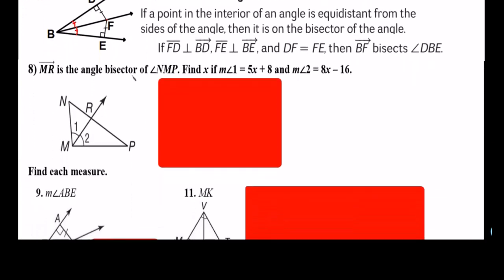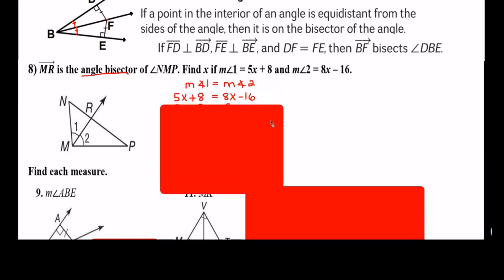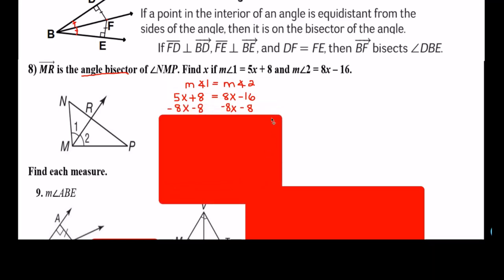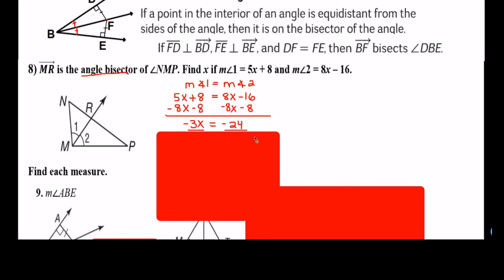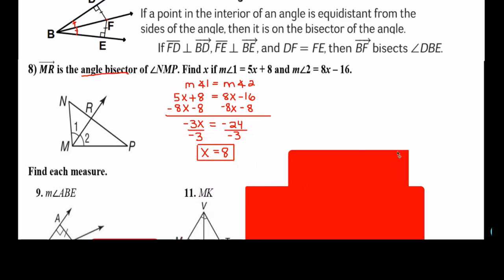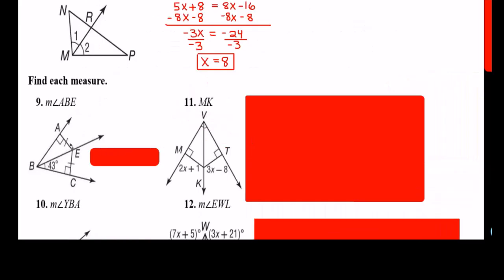Let's look at some examples. MR is the angle bisector of NMP. Find the value of x if angle 1 is 5x plus 8 and angle 2 equals 8x minus 16. Since an angle bisector cuts right in the middle, we set angle 1 equal to angle 2. Set up the equation, cancel the numbers, and we're left with 3x equals negative 24. Divide both sides by 3, and the answer is x equals 8. Next: point E is equidistant to both sides of the angle, so that segment is the angle bisector, meaning this angle is congruent — so the answer is 43 degrees.